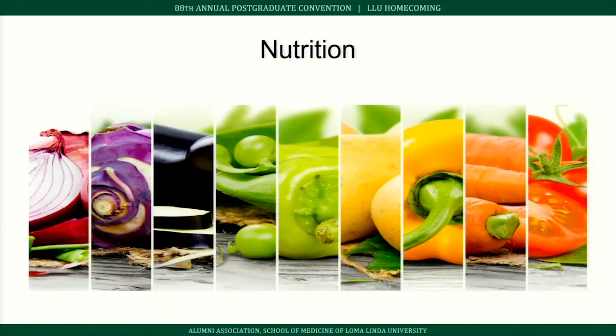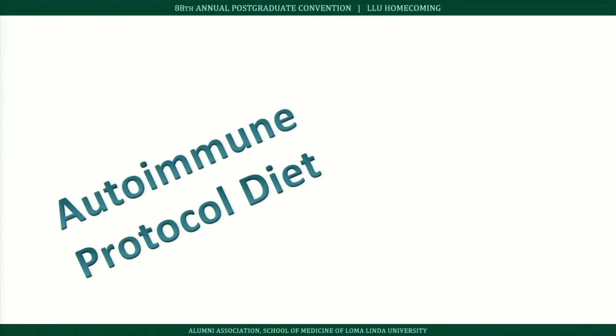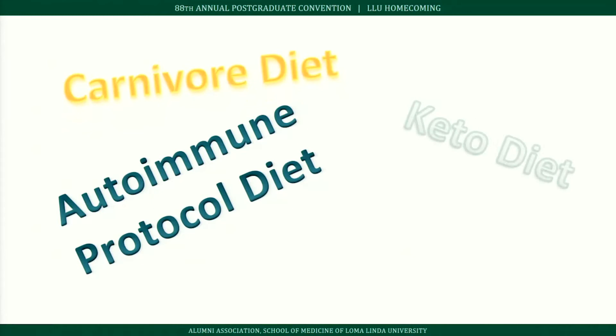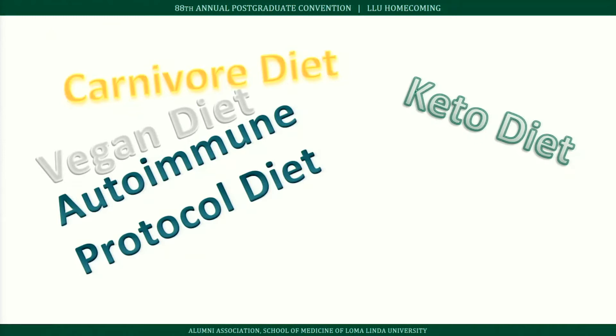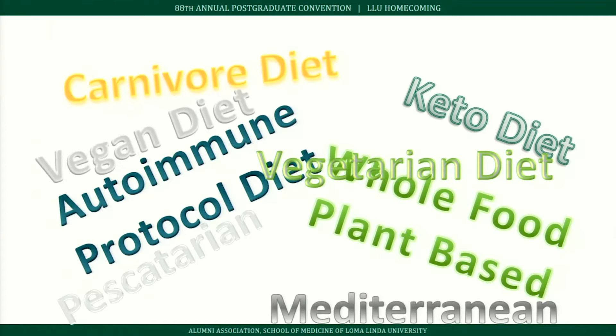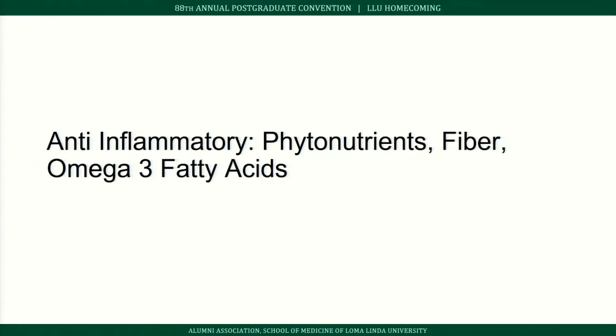Each color of fruits and vegetables on the screen contains phytonutrients that affect your body — and we don't eat enough of them. When considering which diet to recommend — autoimmune protocol, carnivore, keto, vegan, Mediterranean, whole-food plant-based, pescatarian, or vegetarian — it helps to examine the evidence. Anti-inflammatory foods include phytonutrients, dietary fiber, and omega-3 fatty acids.